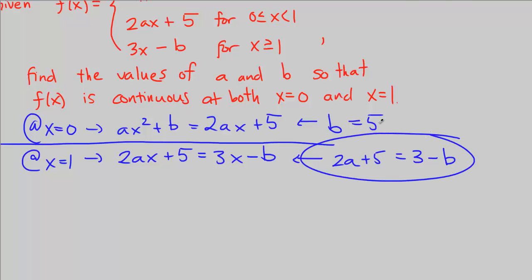So what can we do now? Well, we can use the fact that we know b has to equal 5 to solve for a. So 2 times a plus 5 equals 3 minus b which is 5. 3 minus 5 is negative 2. 2a plus 5 equals negative 2. Subtract 5 from both sides and we get 2a on the left equals negative 7. That means a, divide both sides by 2, is negative 7 over 2.